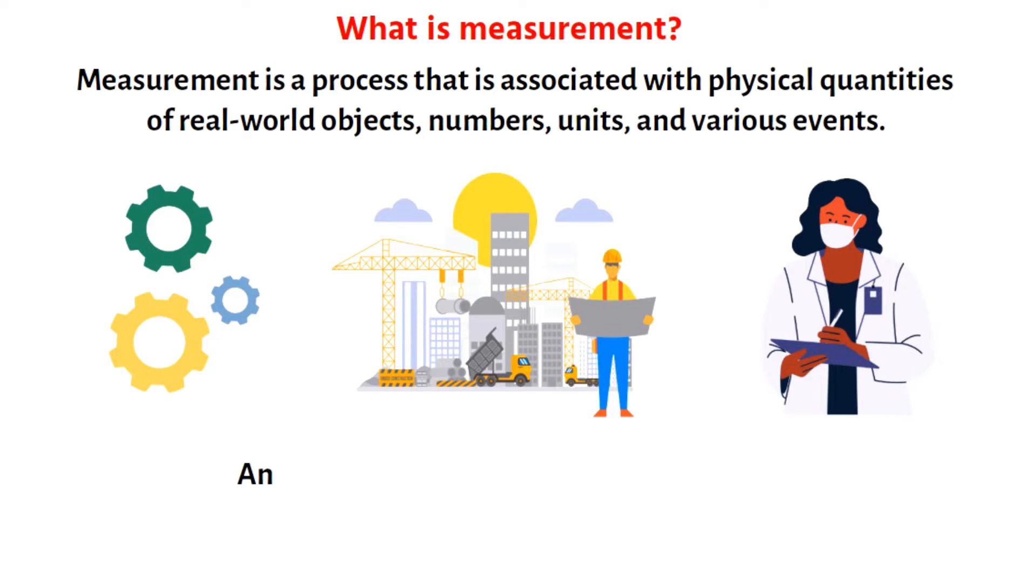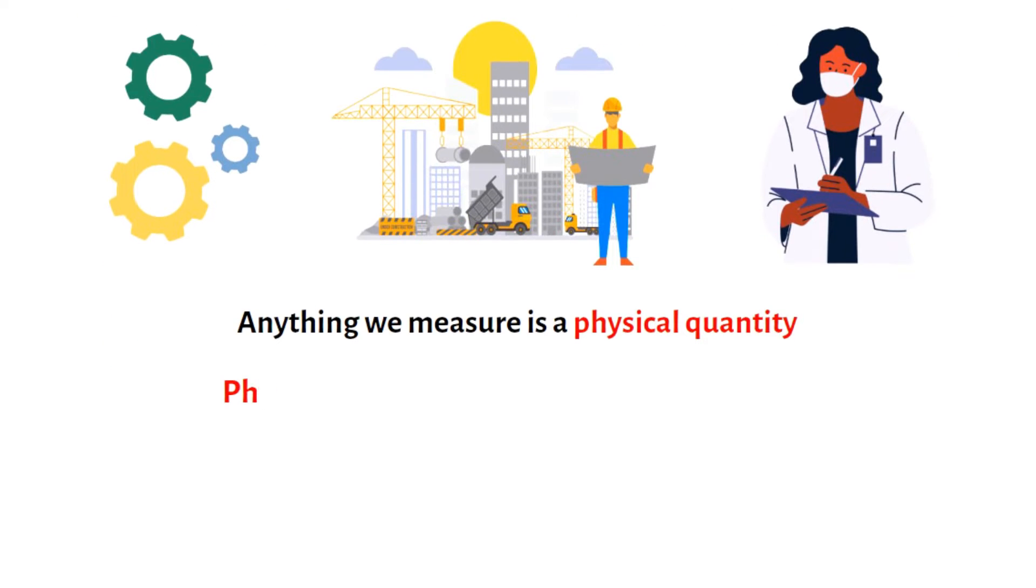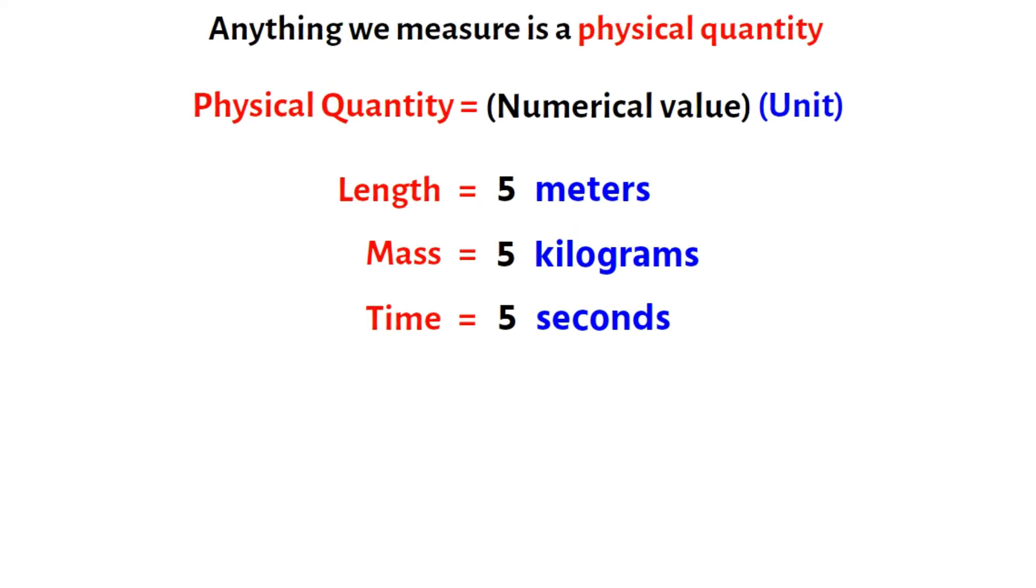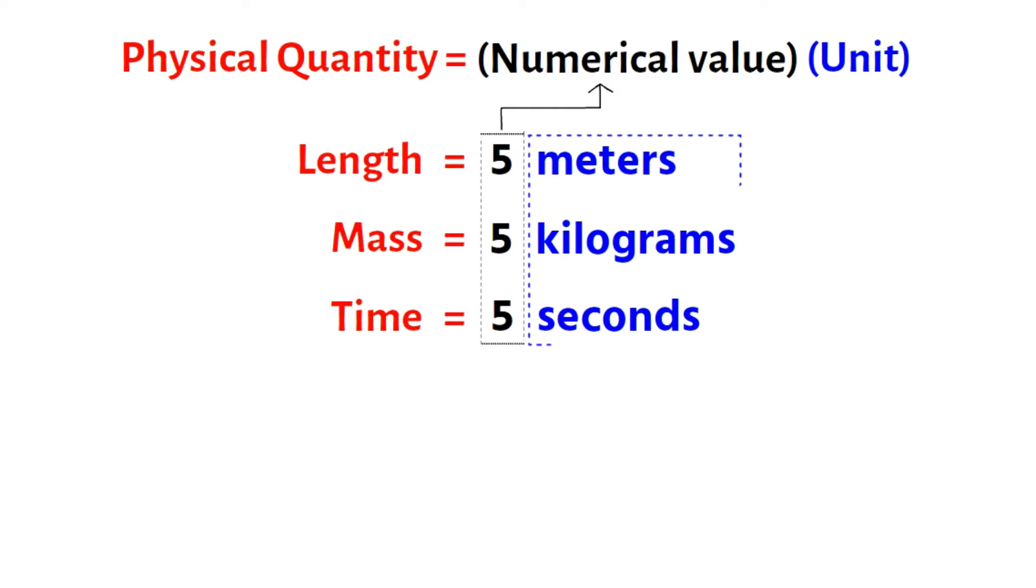As we discussed earlier, anything we measure is a physical quantity. To measure a physical quantity, we need two things, one is the numerical value, and the other is its unit. For example, the physical quantity length can be quantified as 5 meters, mass as 5 kilograms, and time as 5 seconds. Where 5 is the numerical value, and meter, kilogram, and second are the units.